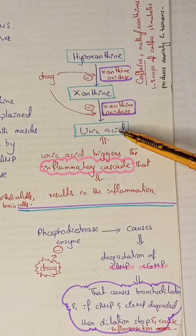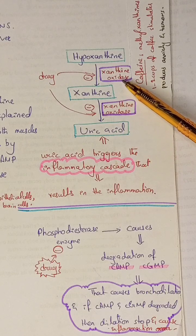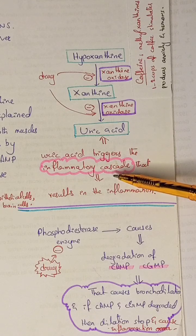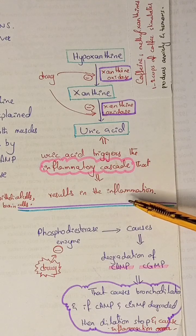and xanthine is converted into uric acid with the help of xanthine oxidase enzyme. This uric acid triggers the inflammatory cascade that results in inflammation.